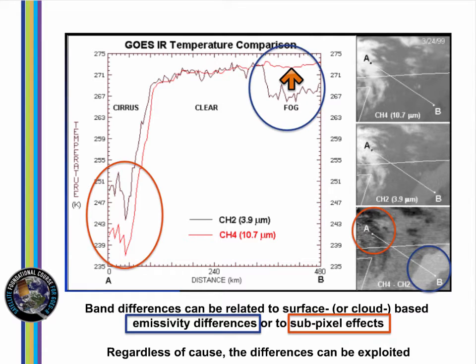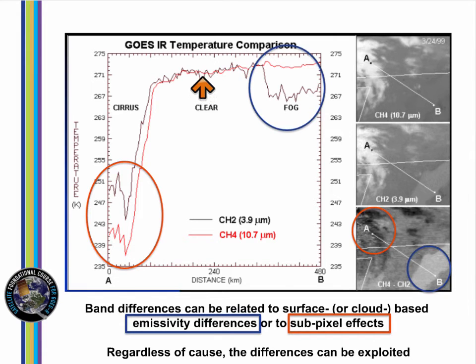Over the cirrus, sub-pixel effects cause a difference so that the 3.9 micron brightness temperature is warmer than the 10.7 micron brightness temperature. In clear regions at night, the 10.7 and 3.9 micron brightness temperatures are similar.